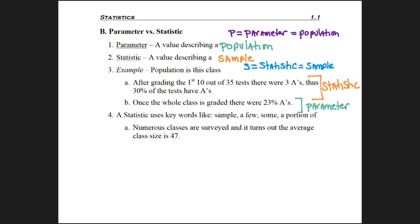Numerous classes are surveyed, and it turns out the average class size is 47. This is a statistic. The way I know it's a statistic is the key word, numerous. It didn't say all classes were surveyed. It just said numerous, meaning a lot, but that didn't mean all of them. So you have a statistic.